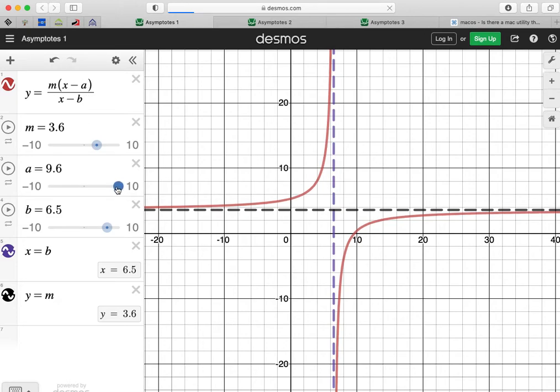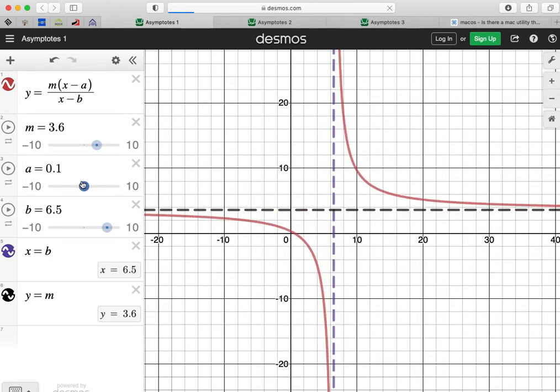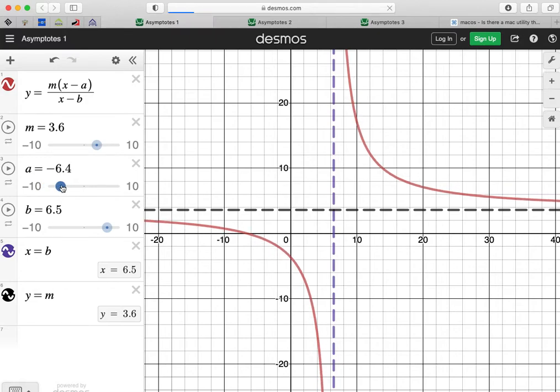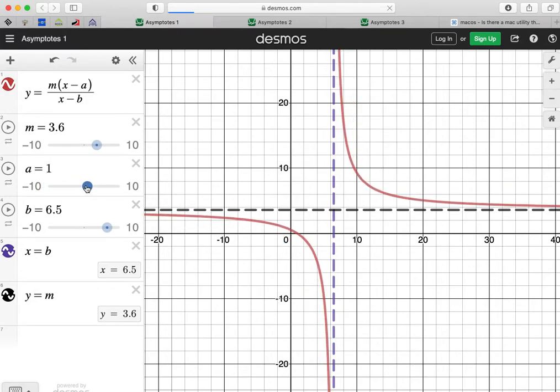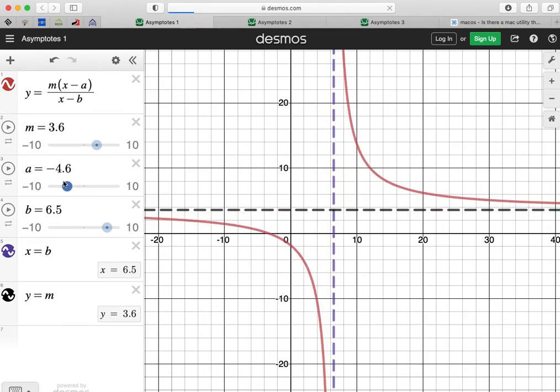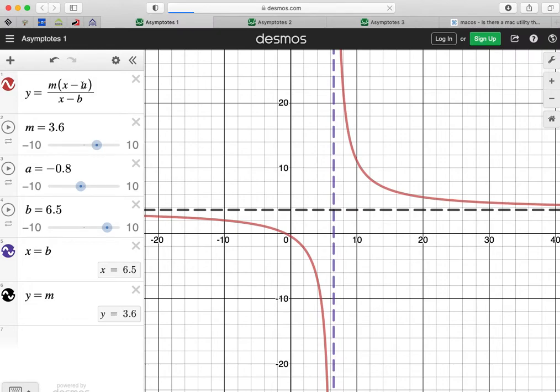So if I change a, which is the top value, you'll notice that that doesn't change the asymptotes. That changes some of the points on the graph. It gets closer and closer, you see, to that point of intersection. So that doesn't seem to change the asymptote. That's interesting.